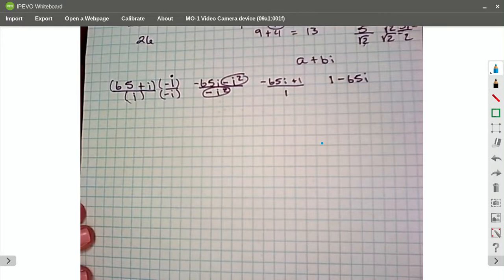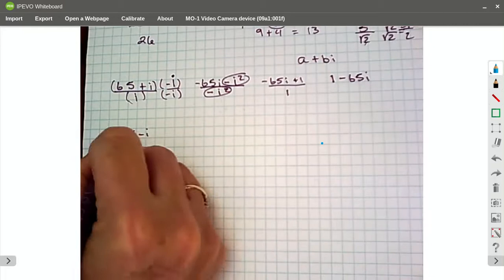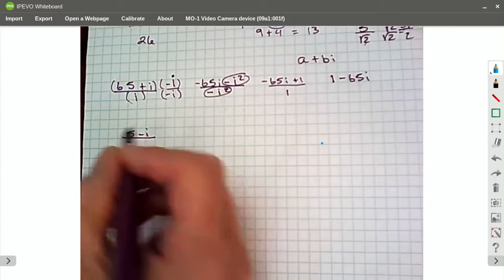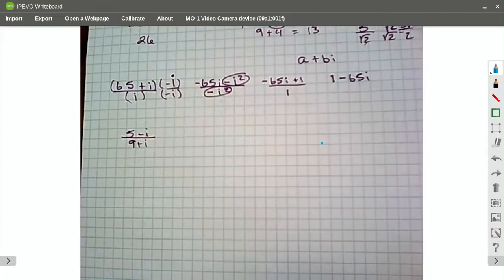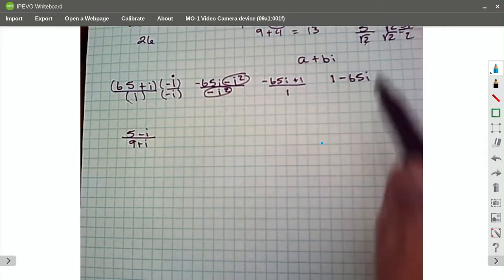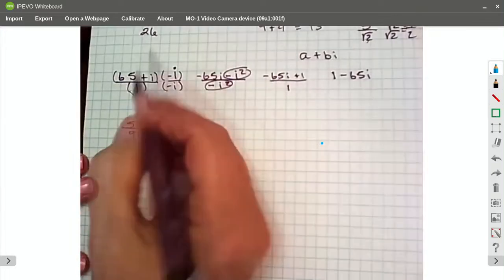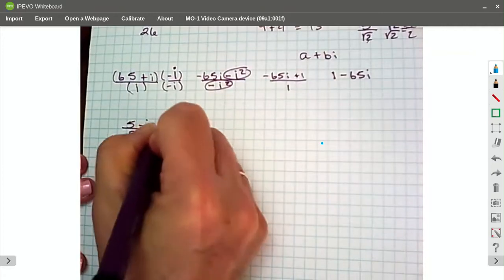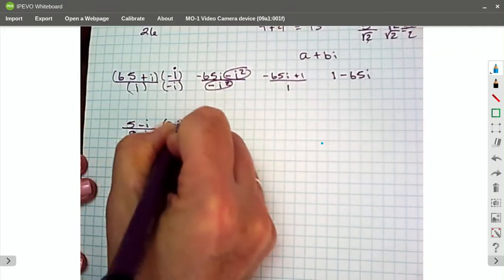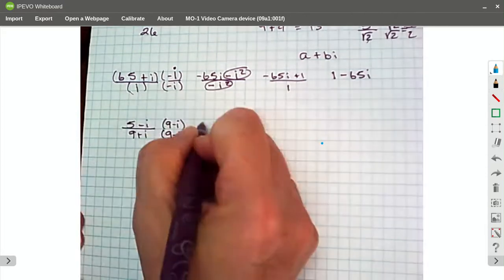So let's try, what if I have 5 minus i over 9 plus i? So down in my denominator, I have that i. I have 9 plus i. I want it gone. I want to do this business right here. So what's the conjugate of 9 plus i? 9 minus i. I'm going to FOIL both top and bottom.